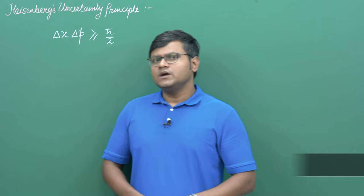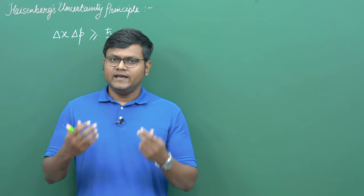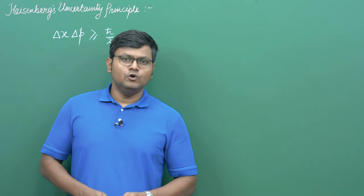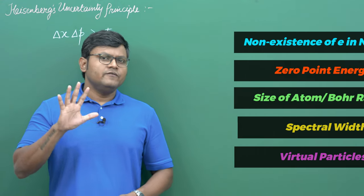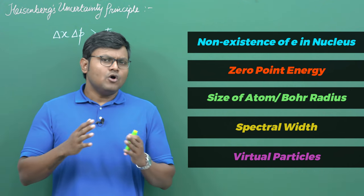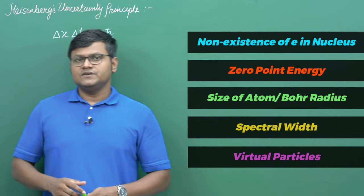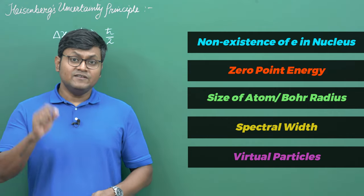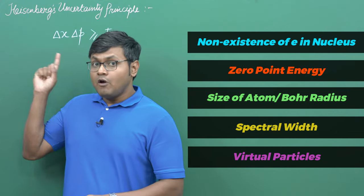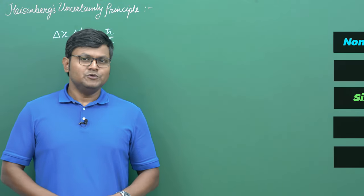In fact, there are many important conclusions in the quantum mechanical world that arise directly from the uncertainty principle. In this particular video, I am going to talk about five very important, very interesting, very peculiar and very non-commonsensical conclusions that directly arise from the uncertainty principle. I am going to discuss all of them in detail and mathematically prove each one of them straight from the uncertainty principle.